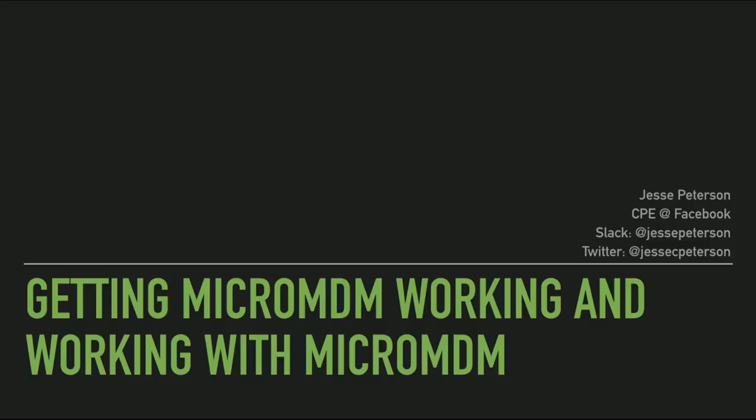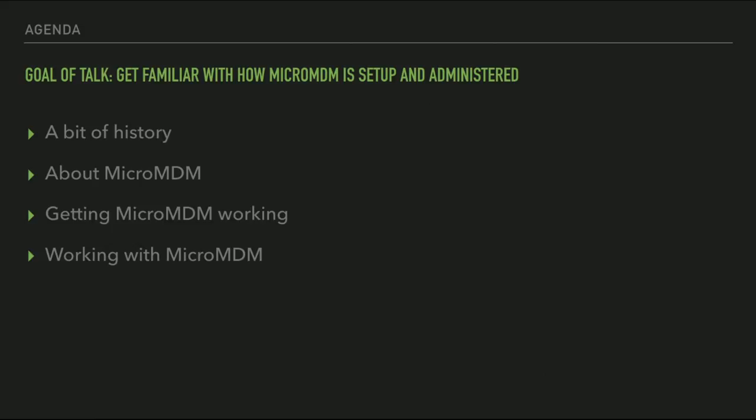Last year we were here and talked about MicroMDM — a lot about the theory, the protocol level, and how that stuff works. For this one I wanted to focus and go a little bit slower, actually walking through the process of setting up MicroMDM and getting it running, especially around certificates. We'll cover a bit of history, then MicroMDM features, changes, and adoption, and then jump into getting it working and using the API to do useful stuff.